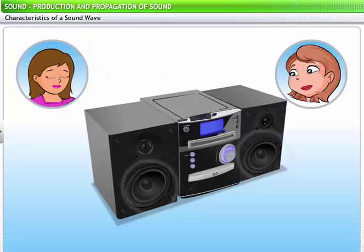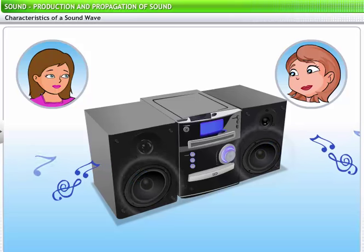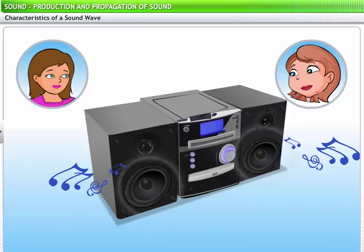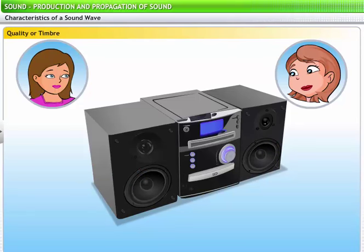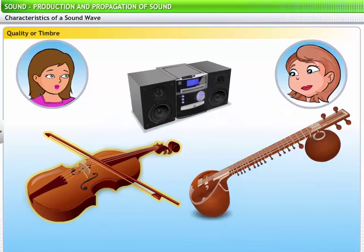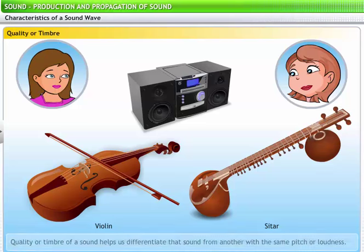Let's listen to some music. Can you tell whether it is a single instrument or two instruments playing? Yes, it is definitely two instruments. One sounds like a violin and the other could be a sitar. You could identify the difference in instruments because of the type of sound you heard, right? Yes. Sound emitted by every instrument has a unique characteristic that distinguishes it from other sounds with the same pitch or loudness. This characteristic is the quality or the timbre of the sound.